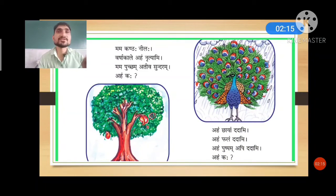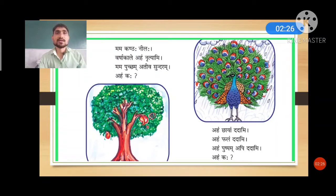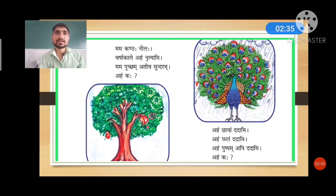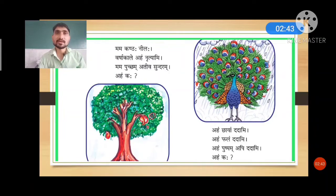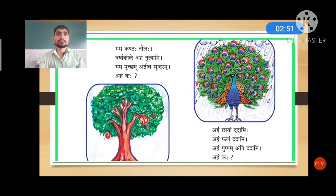This is the interface you can see in your book. Let me read these eight lines and two words. Pay attention: Mama kantaha nilaha, varsha kale aham nrityami, mama puccham ativa sundaram, aham kaha. Second: aham chayam dadami, aham phalam dadami, aham pushpam api dadami, aham kaha.